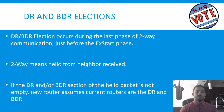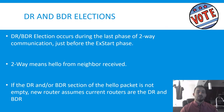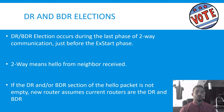The DR and BDR are elected via an election process that occurs right at the end of the two-way state, just before the ExStart and Exchange phases begin. The two-way phase means we've noticed our own router ID and the hello packets from our neighbors. The hello packet includes the DR and BDR for the segment. If that field is not empty — not 0.0.0.0 — the new router assumes the currently elected DR and BDR are valid and updates its own hello packets accordingly. If the field is blank, that router will attempt to elect itself as the DR or BDR.